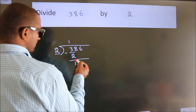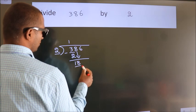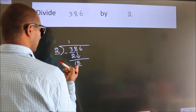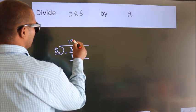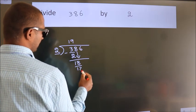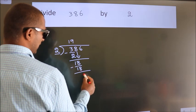After this, bring down the beside number. So 8 down. So 18. When do we get 18? In 2 table, 2 9s, 18. Now we subtract. We get 0.